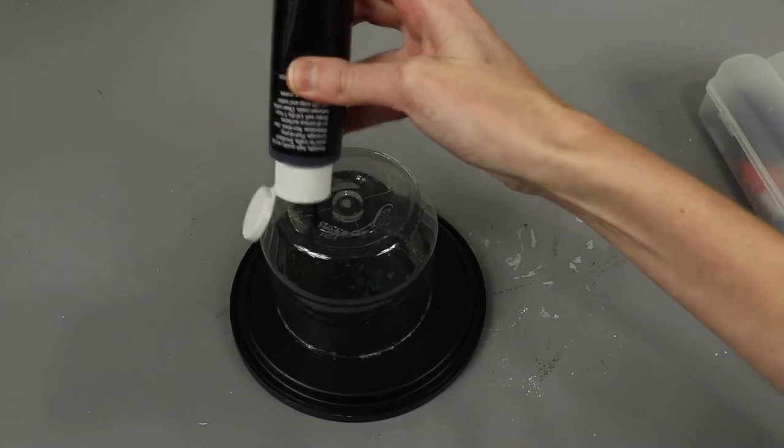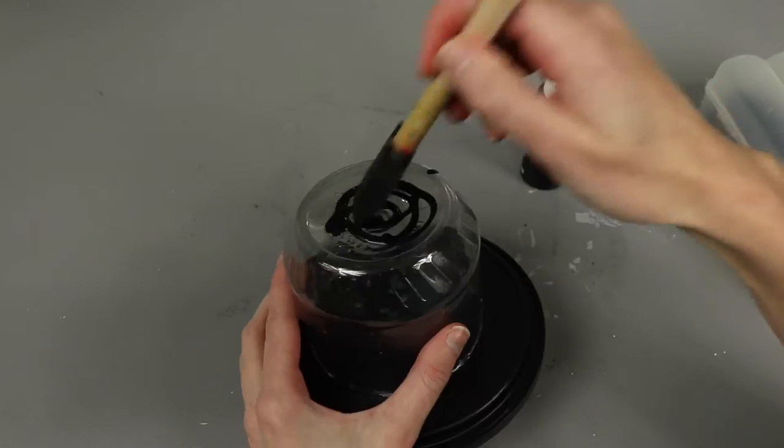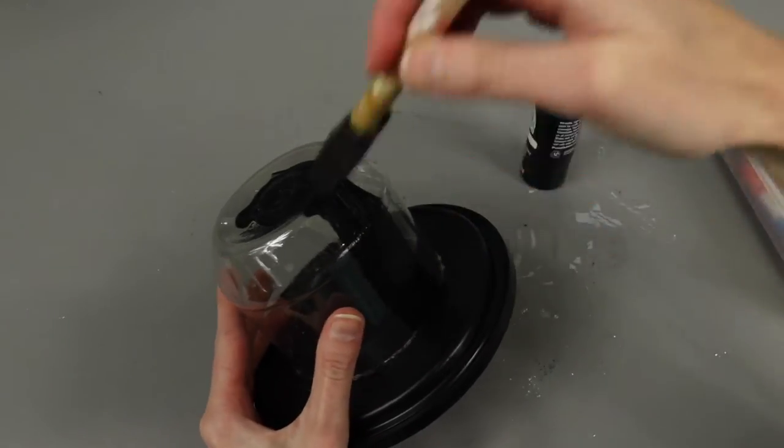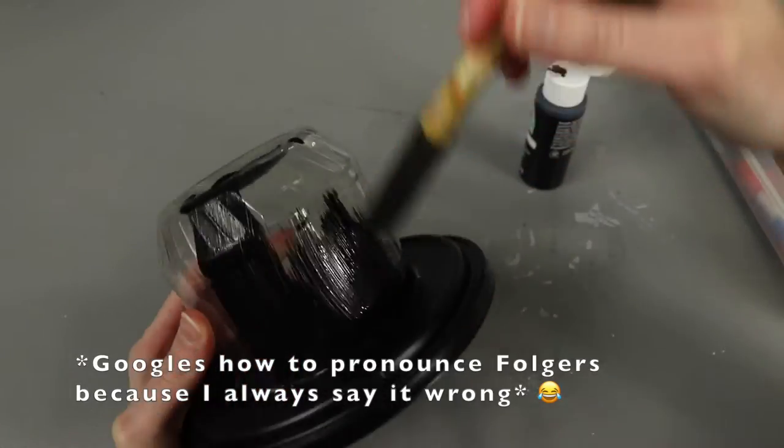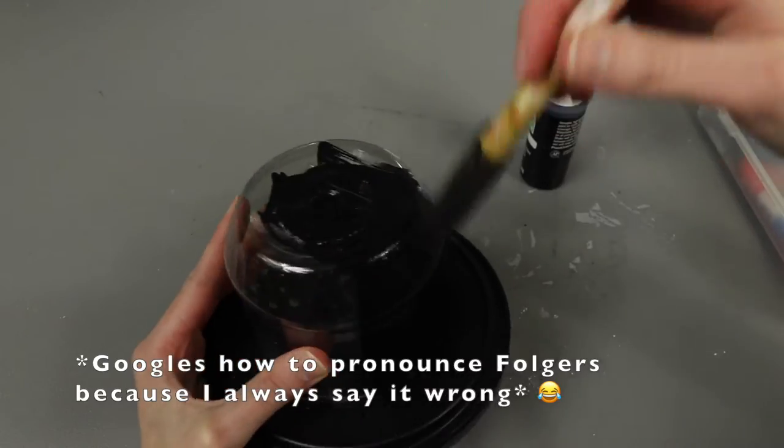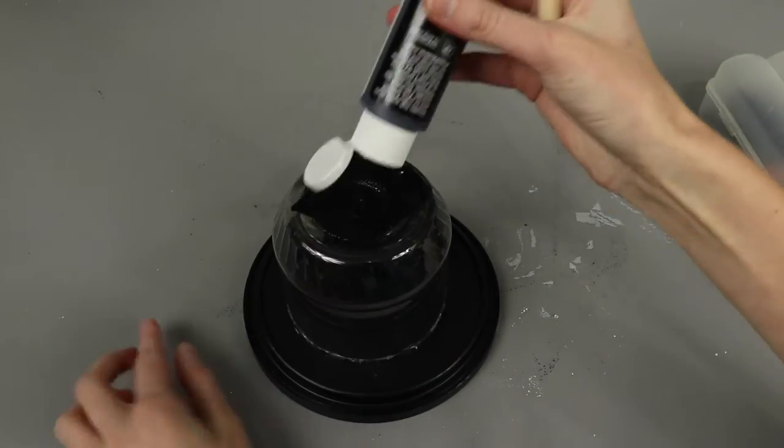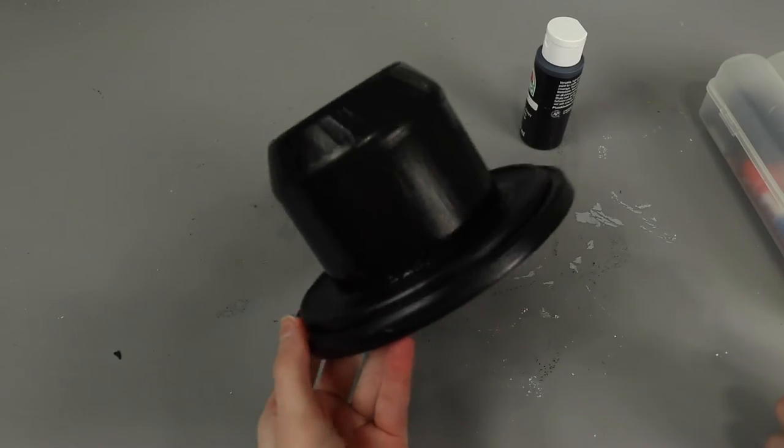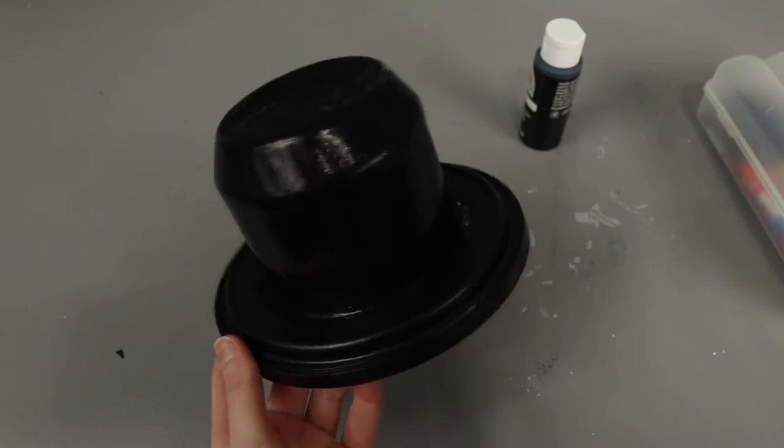Once the glue cooled, I painted the top of the hat black with my favorite apple barrel acrylic paints from Walmart. Now you can see Folgers on the lid a little bit but it's not super noticeable so I just left it be because hey that's the beauty of making my own decorations if I want to leave it where you can read Folgers on the lid I can do that.